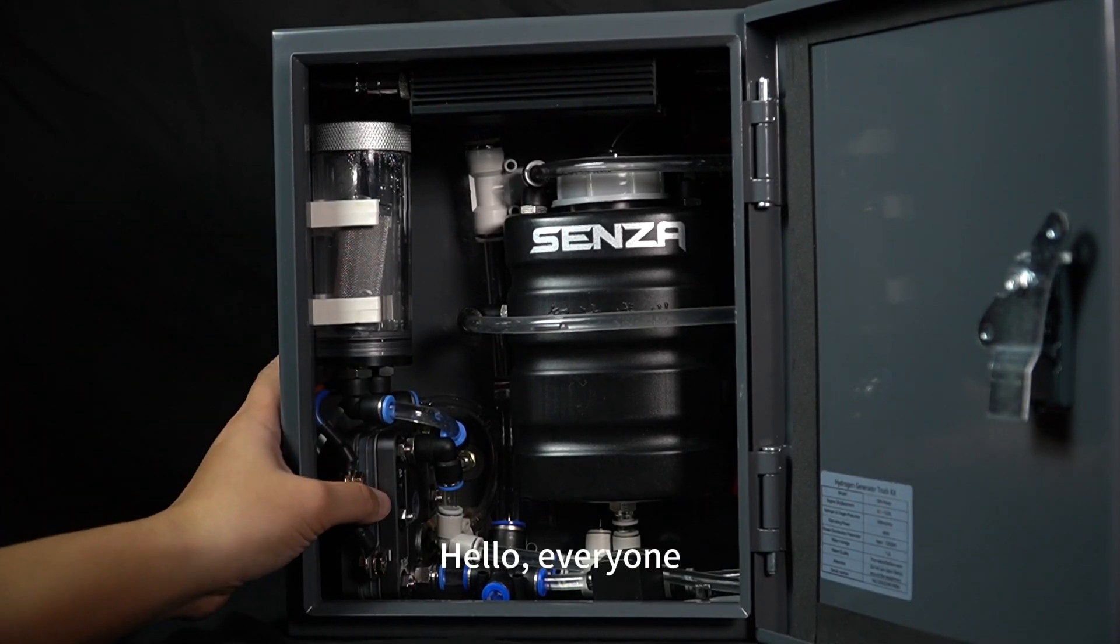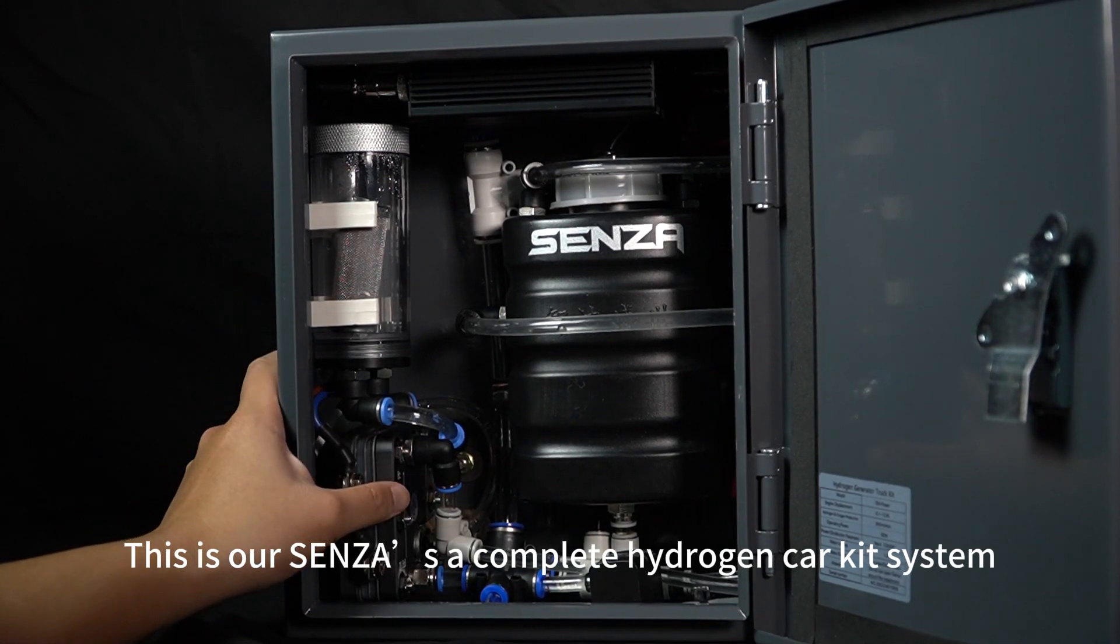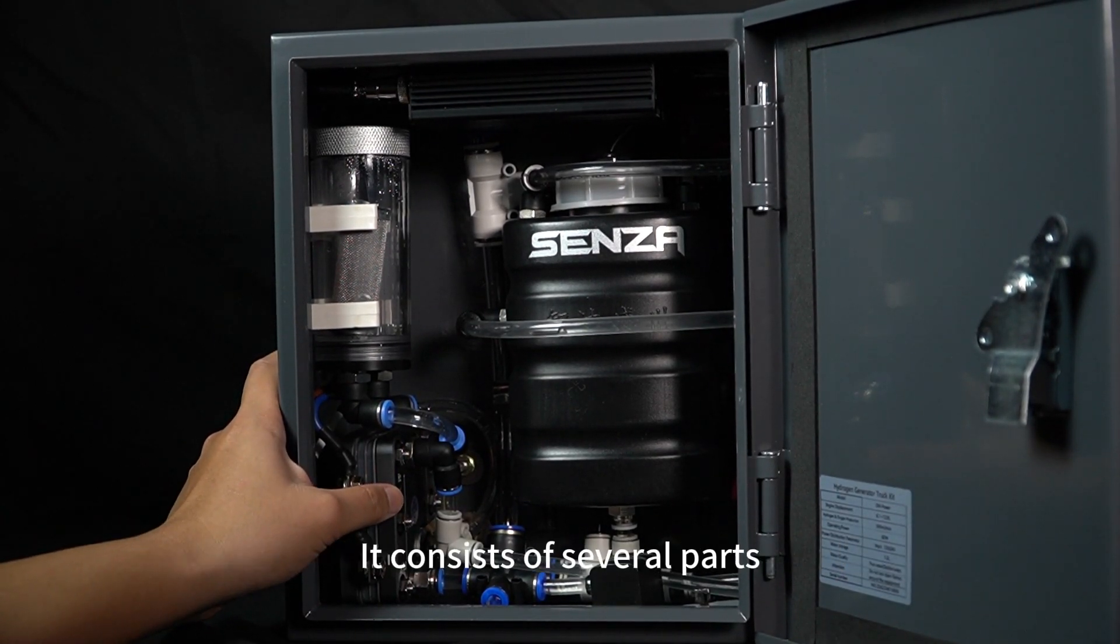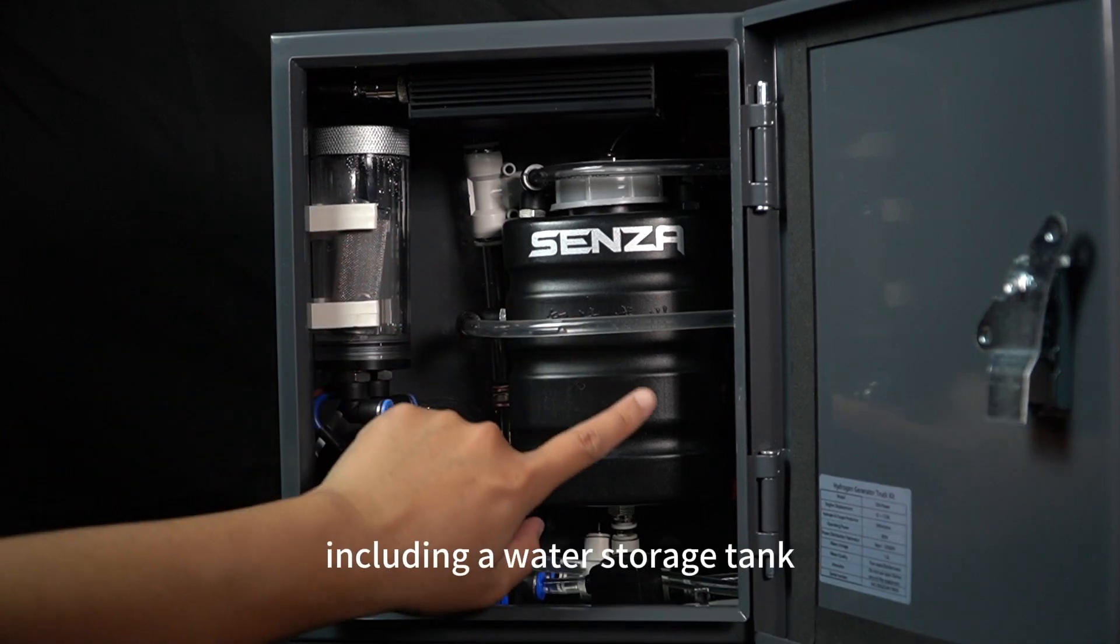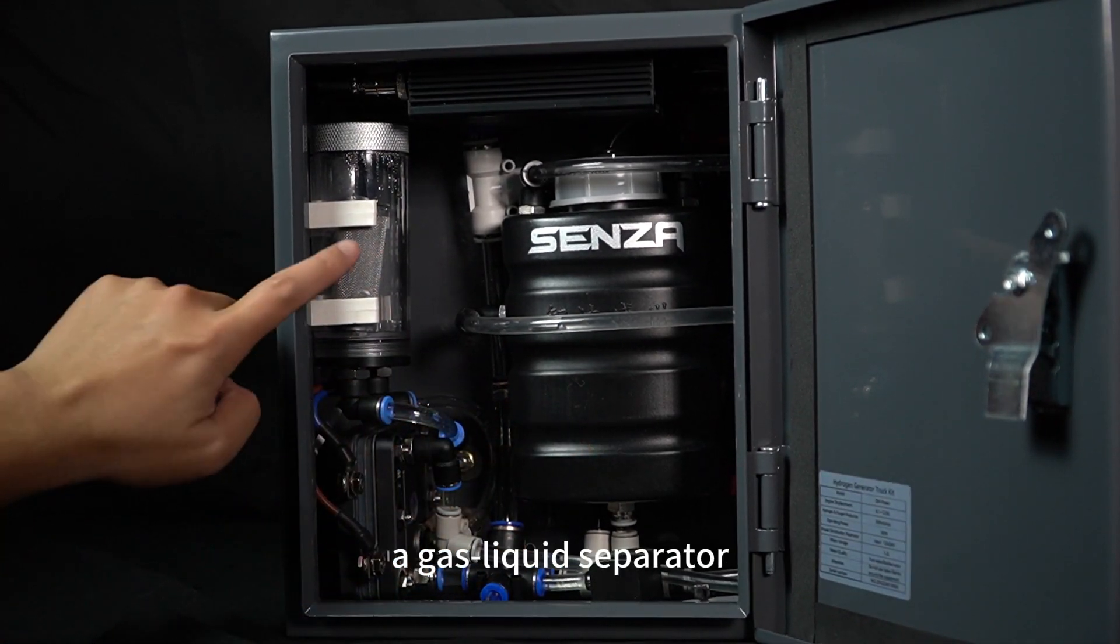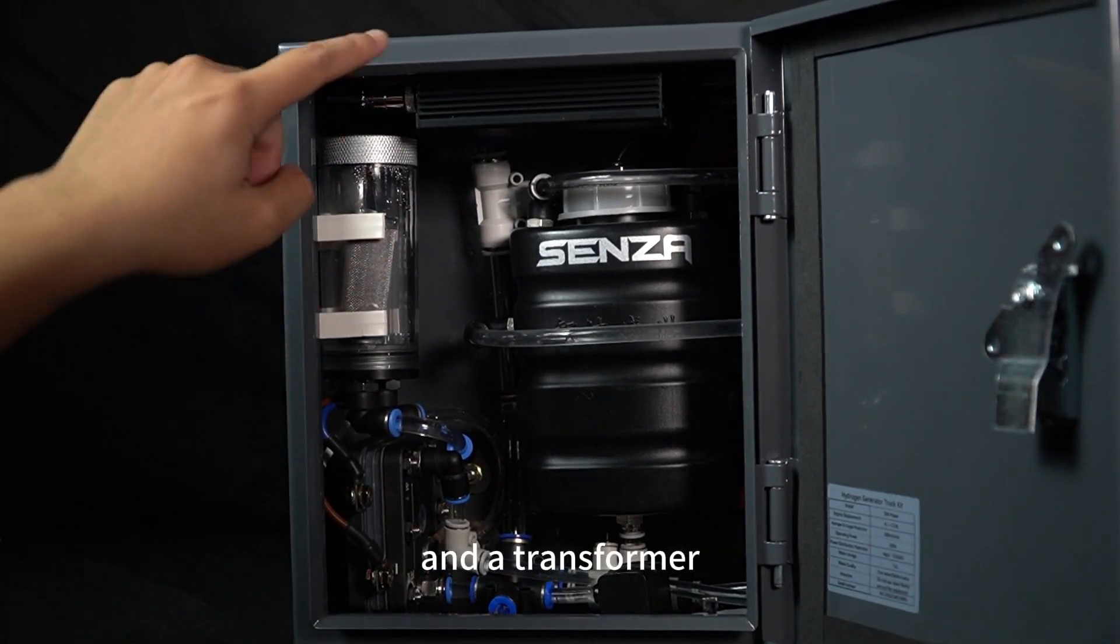Hello, everyone. This is our SENSES complete hydrogen car kit system. It consists of several parts, including a water storage tank, a gas liquid separator, and a transformer.